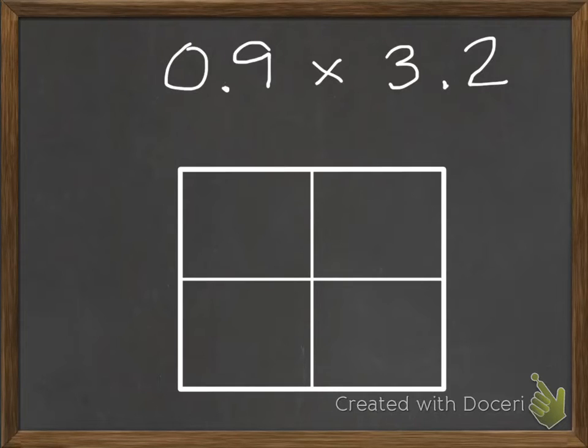We are going to first start with the number 9 tenths and separate it into its whole number and decimal parts. The whole number is zero because there is no whole number in this number. The decimal portion is 9 tenths. We write it with the zero and the decimal because if you just wrote 9, you would forget what place value you were talking about.